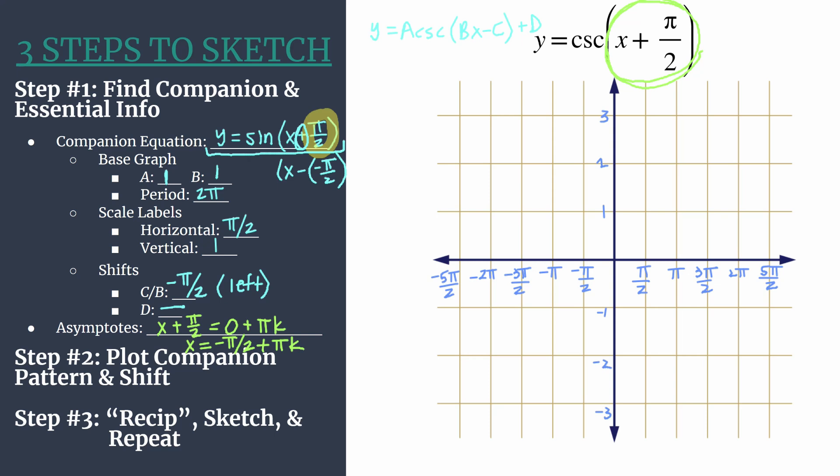Substituting in different values for K, I usually like to substitute in zero first because it's a very simple calculation. We should expect an asymptote at x equals negative pi over two. Substitute in K is one, simplify, we should expect another happening at positive pi over two. If you let K equal negative one, there should be one at negative three pi over two and so on. So this equation can be so helpful in that double check.